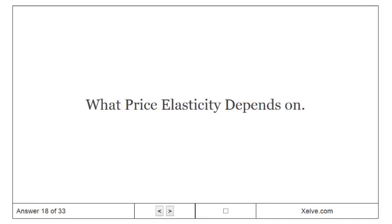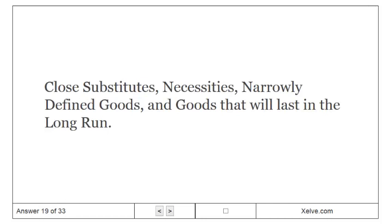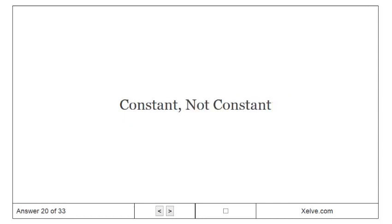What price elasticity depends on and what are the determinants of high price elasticity: close substitutes, necessities, narrowly defined goods, and goods in the long run. A demand curve slope is constant while the elasticity is not constant.